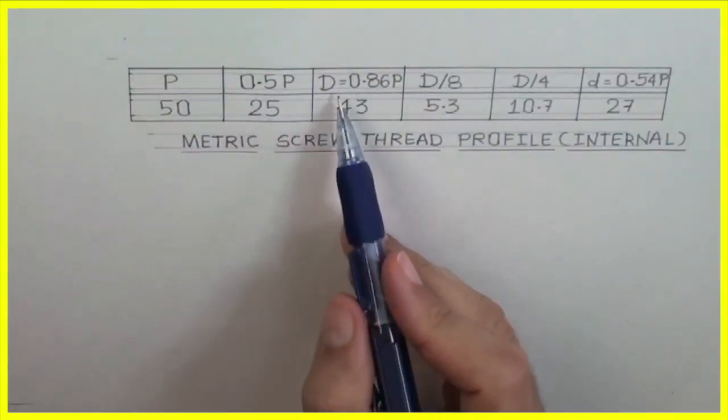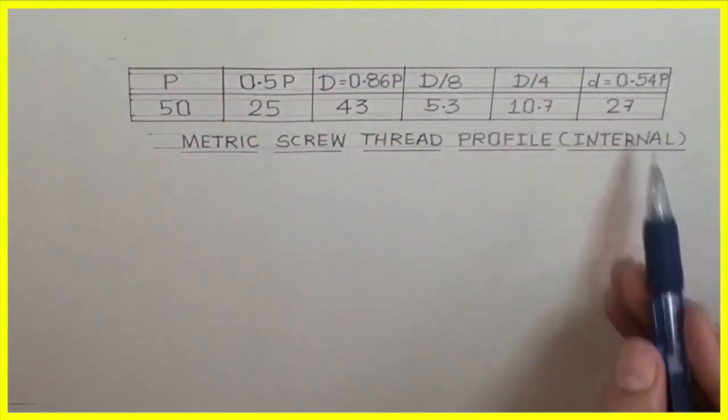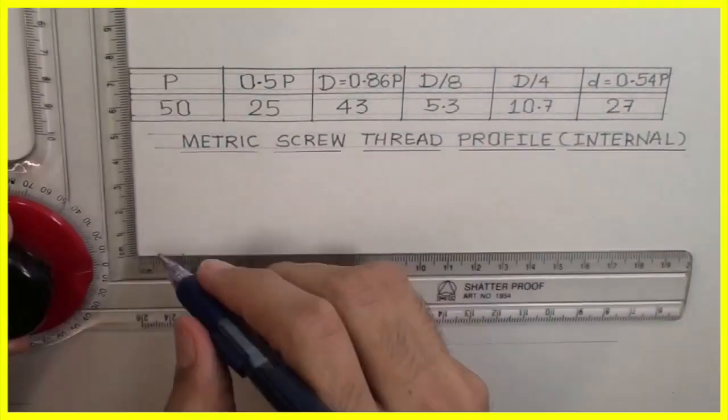Pitch equals to 50, 0.5p, 0.86p, d by 8, d by 4, and small d. We will find out all the values. First, we will mark d.